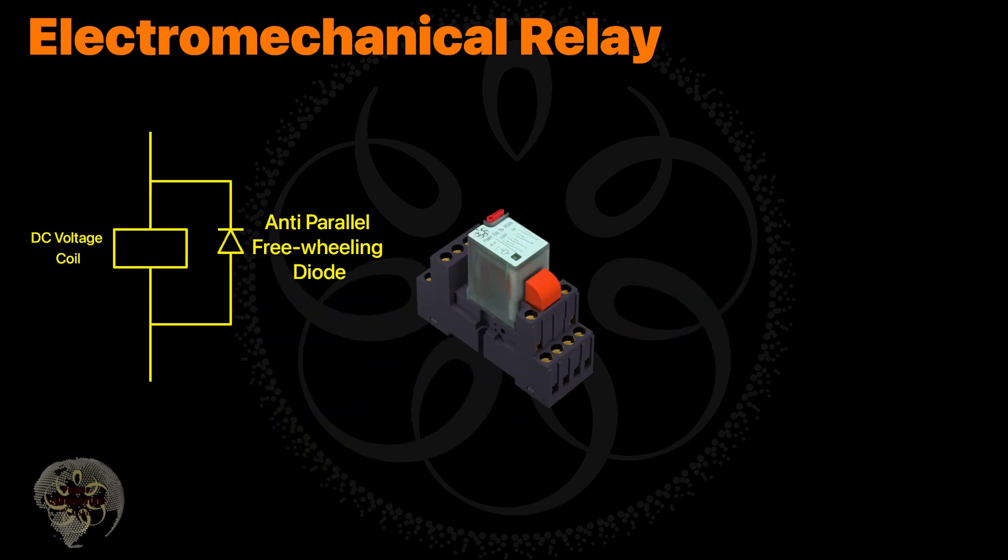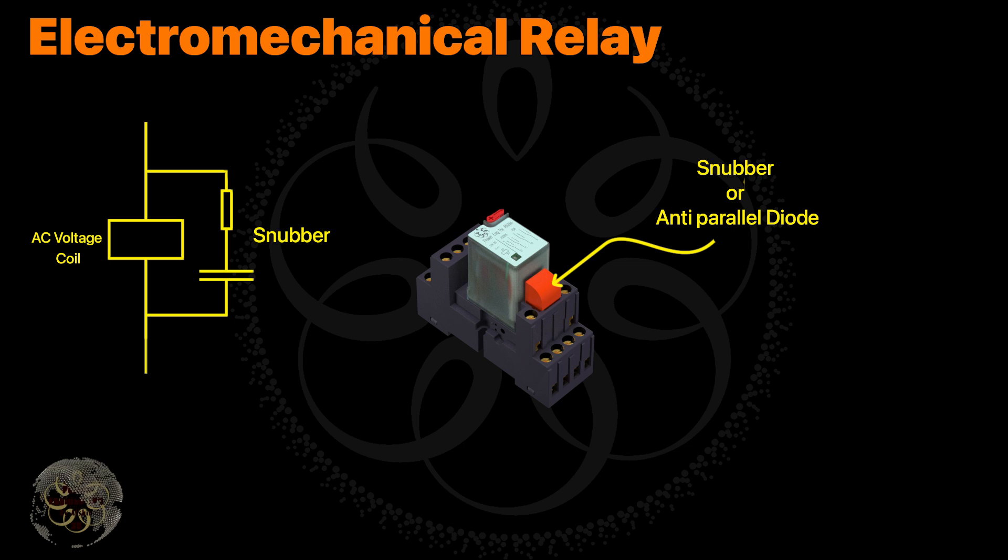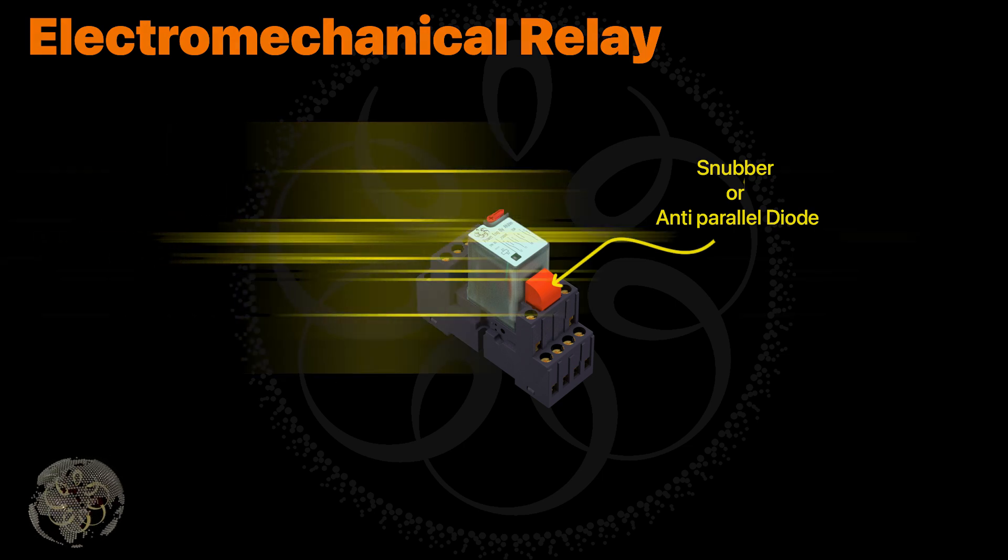This diode prevents voltage spikes, dV/dt, caused by the sudden interruption of coil current. However, this diode cannot be used in AC relays. Instead, AC relays use a snubber circuit, which consists of a resistor and capacitor connected in series.